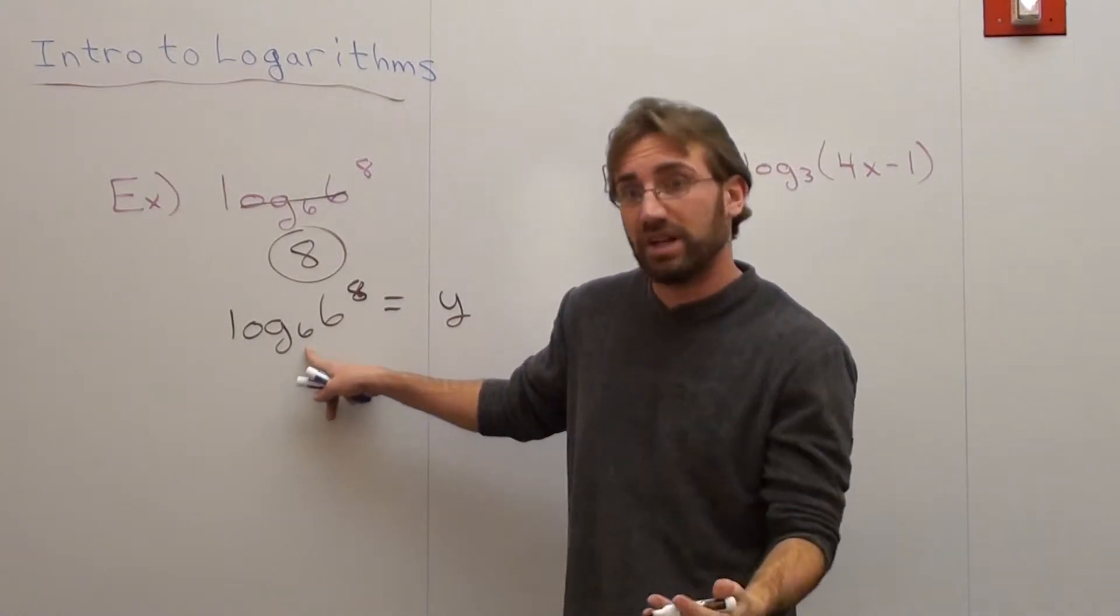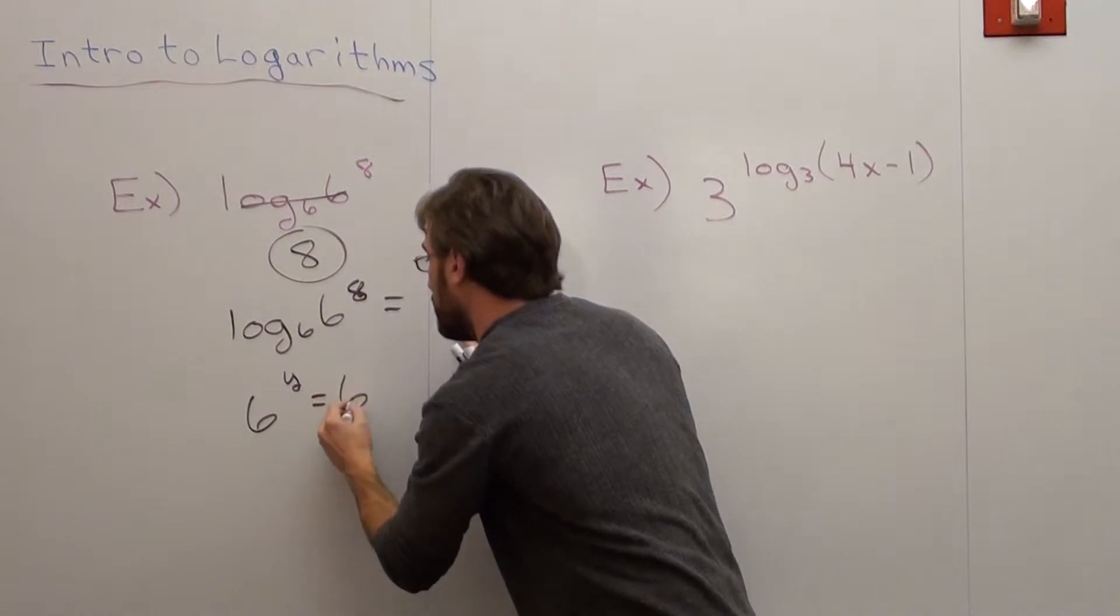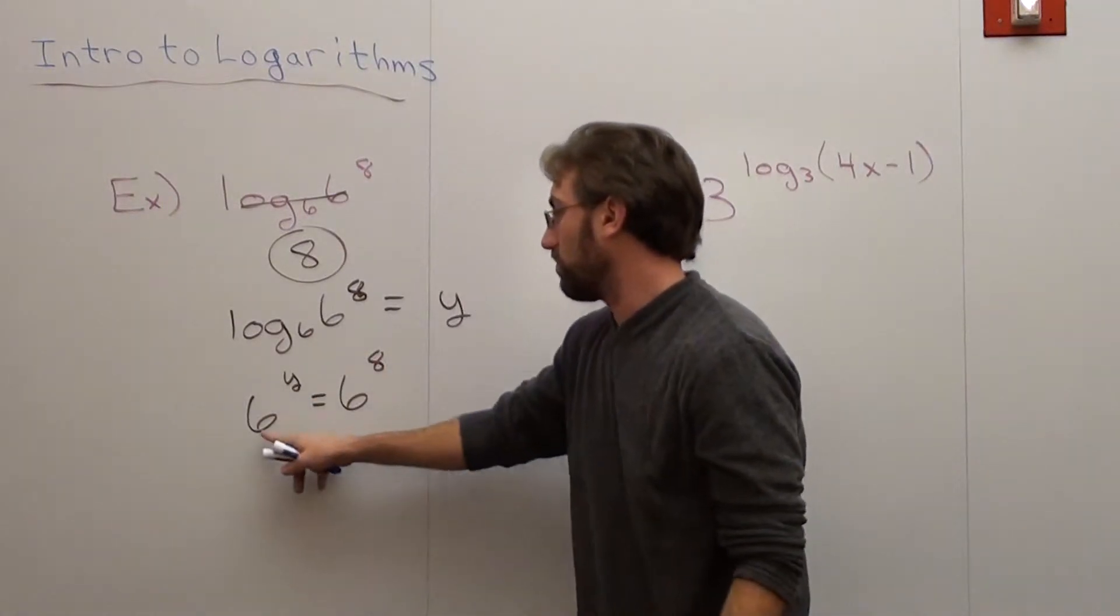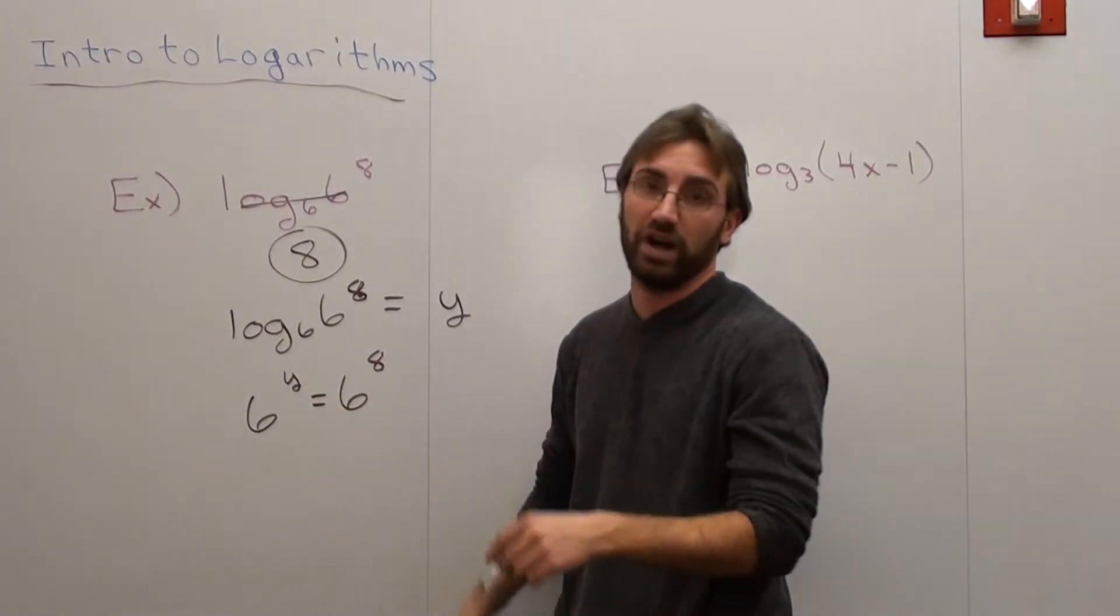If I want to write this in exponential form, 6 to the y equals 6 to the 8th. What's going to make y equivalent to this? 6 to what equals 6 to the 8th? Y equals 8.